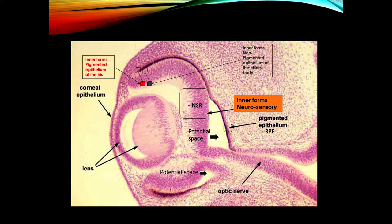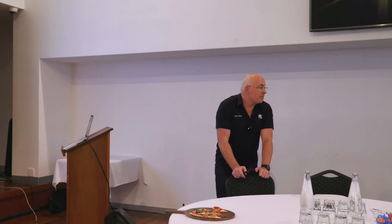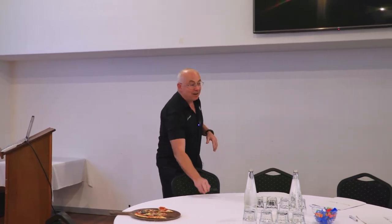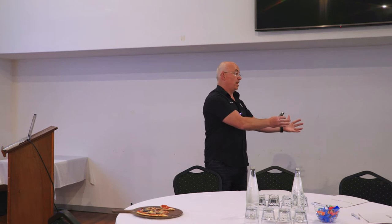How many histological layers are credited to the retina? Ten layers. Layer ten — or layer one whichever way you want to look at it — is the retinal pigment epithelium. The neurosensory retina takes up the rest.